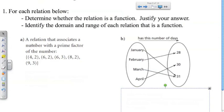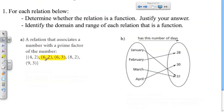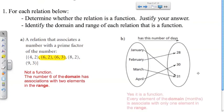A relation associates a number with a prime factor of that number. Looking at the ordered pairs — (4,2), (6,2), and (6,3) — we can see that 6 appears as the first element twice, associated with both 2 and 3. Because 6 is associated with more than one element in the range, this is not a function. The arrow diagram on the right is a function because every element of the domain is associated with only one element in the range. The first set is the domain and the second set is the range.